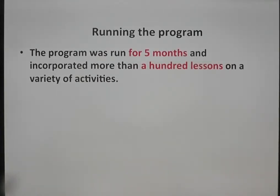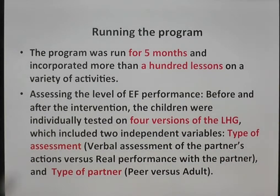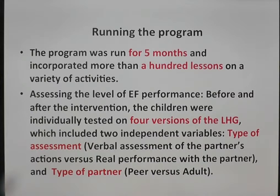The program was run for five months and incorporated more than a hundred lessons on a variety of activities. Assessing the level of executive performance was done before and after the intervention: the children were individually tested on four versions of the Luria Hand Game, which included two independent variables — type of assessment (verbal assessment of the partner's actions versus real performance with the partner) and type of partner (peer versus adult).